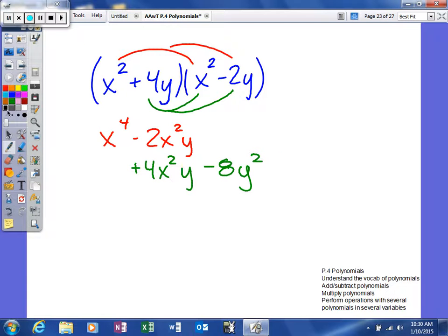So what we're going to do is just combine like terms. So bring that down, x to the fourth, and then plus 2x squared y, and then minus 8y squared.